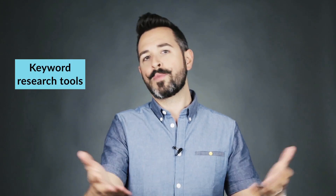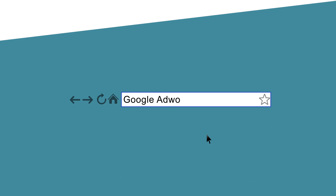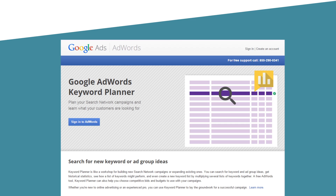From that expanded list, we're going to do one more process of expansion using keyword research tools. The most basic one is Google's AdWords keyword tool — you need to sign into your AdWords account. It's free to join and you don't actually have to buy any advertising.